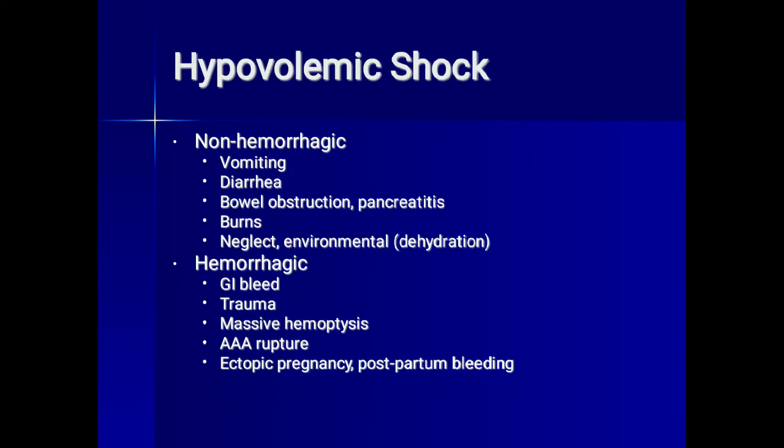Hypovolemic shock can be non-hemorrhagic, such as from prolonged vomiting or diarrhea, bowel obstruction, pancreatitis, burns, neglect, and environmental causes. Hemorrhagic shock can be due to GI bleed, traumatic bleed, massive hemoptysis, abdominal aortic aneurysm rupture, ectopic pregnancy, and postpartum bleeding.